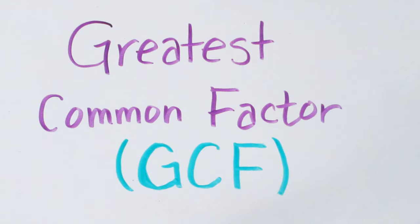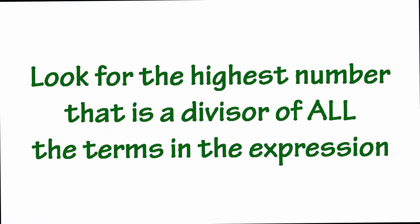So for our first factoring example, we're going to be using the greatest common factor method. Finding a greatest common factor means looking at all of the terms in your question and dividing them all by the highest number possible.